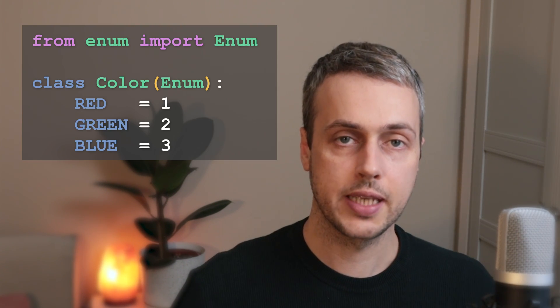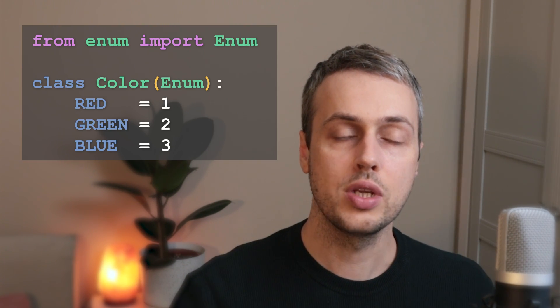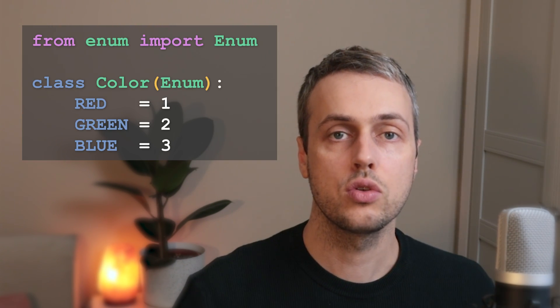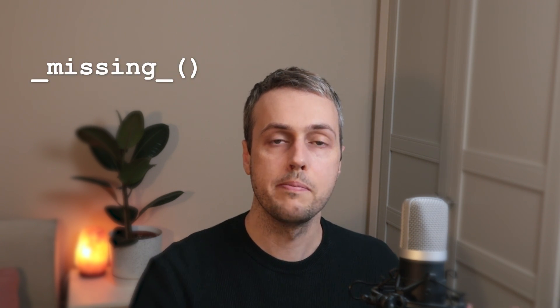In this video we're going to explore the Python enum type, which we can use to store predefined values in an idiomatic way. As an example we're going to see how we can create a case insensitive enum by using the underscore missing method. We'll also look at the Python 3.11 string enum class and finally look at Pydantic and how we can integrate enums with Pydantic models.